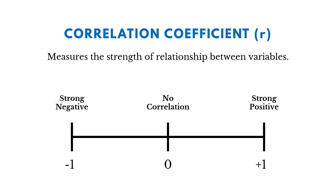The correlation coefficient measures the strength of the relationship between variables. We call this R, and it's always going to be somewhere between negative one and one. At negative one, it's a strong negative relationship — when one variable goes up, the other tends to go down.